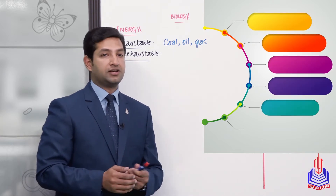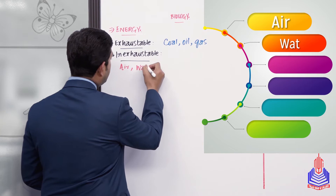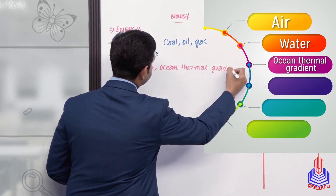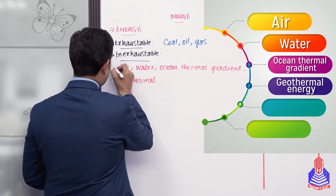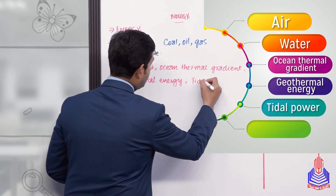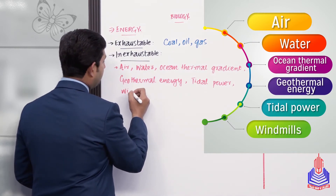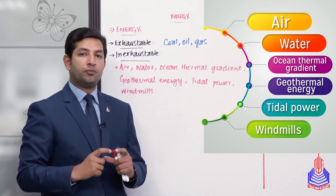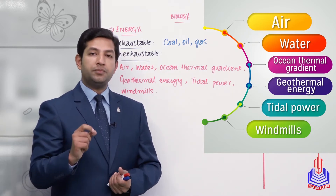Inexhaustible resources میں بہت زبردست متبادل طریقے ہیں۔ ان میں ہوا، پانی، ocean thermal gradient، geothermal energy، tidal power، اور windmills شامل ہیں۔ یہ وہ متبادل ذرائع ہیں جو ہوا، پانی اور زمین میں موجود energy پر dependent ہیں۔